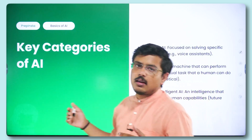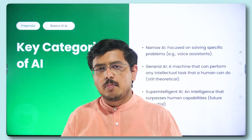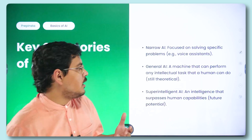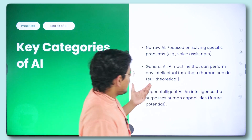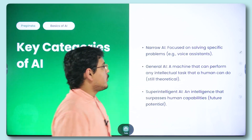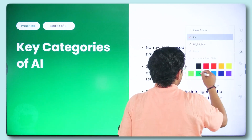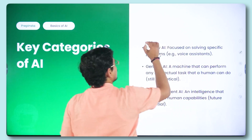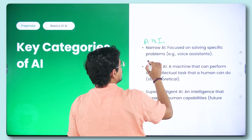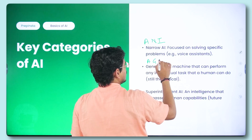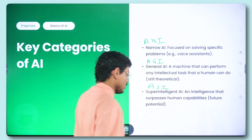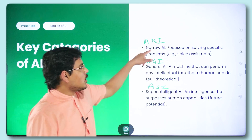Moving ahead, we have three primary categories in AI: Narrow AI, General AI, and Super Intelligent AI. Narrow AI is also known as ANI — Artificial Narrow Intelligence. General AI is known as AGI — Artificial General Intelligence. And Super Intelligent AI is known as ASI — Artificial Super Intelligence.